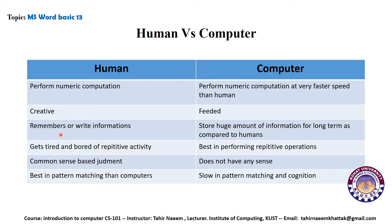The third characteristic is memory. Whenever we take a course, we take down notes and try to remember things, but we remember information for only a certain amount of time and need to study again to memorize. A computer, however, is able to store a huge amount of information for the long term and retrieve it whenever needed, outperforming humans in this regard.